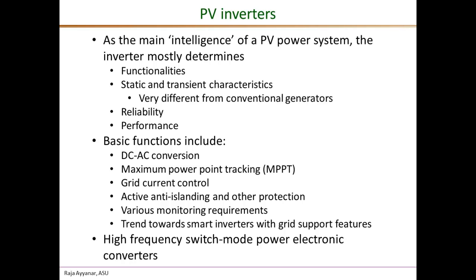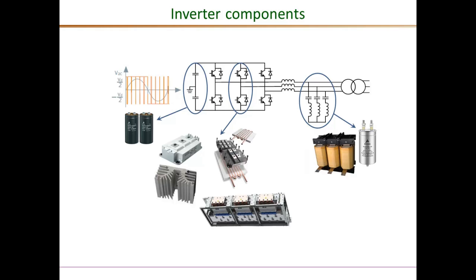It is important to remember that PV inverters are high-frequency switching power electronic converters. Some of the major components of an inverter are shown in this slide. These are switch-mode power converters with semiconductor switches that switch at fairly high frequencies in the 5 to 20 kilohertz range to produce the switching waveforms, which have the 60 Hz fundamental component that we essentially control to meet our control objectives. The switches are made of semiconductor devices with their heat removal mechanism.